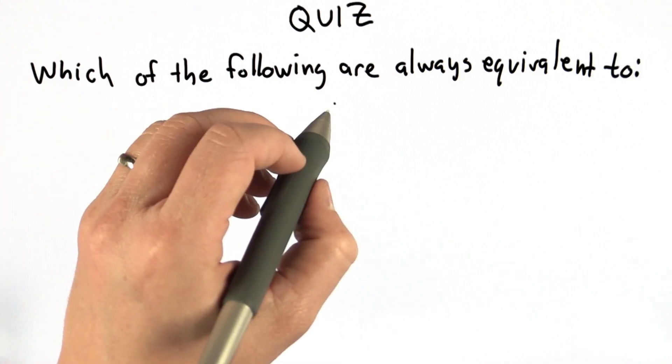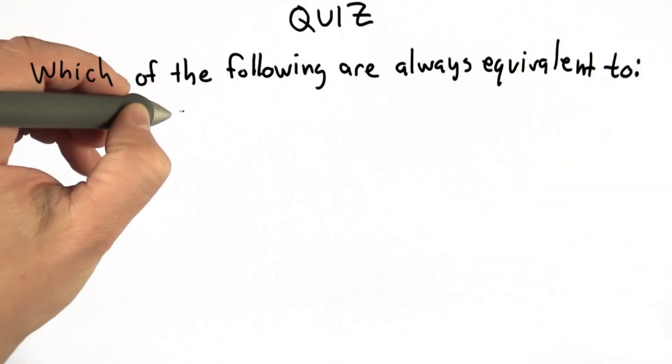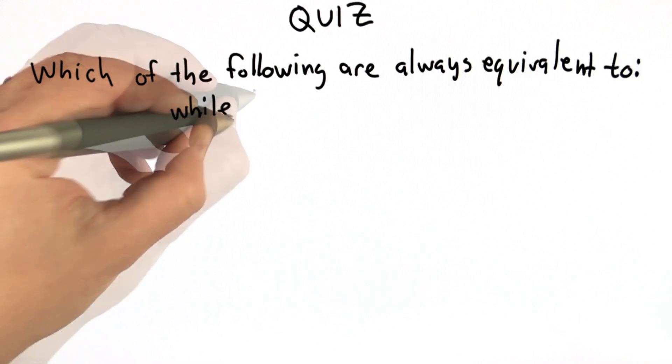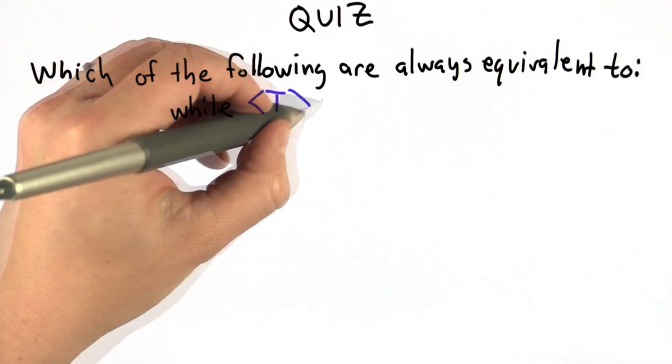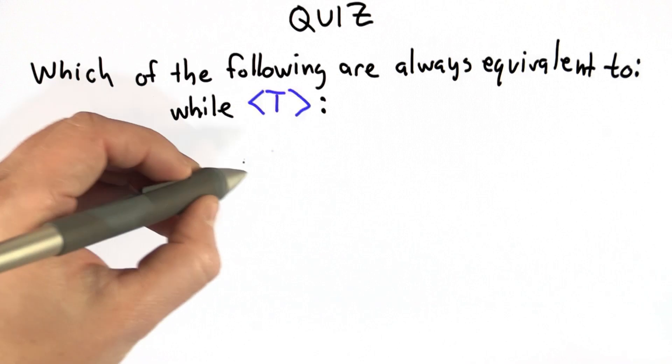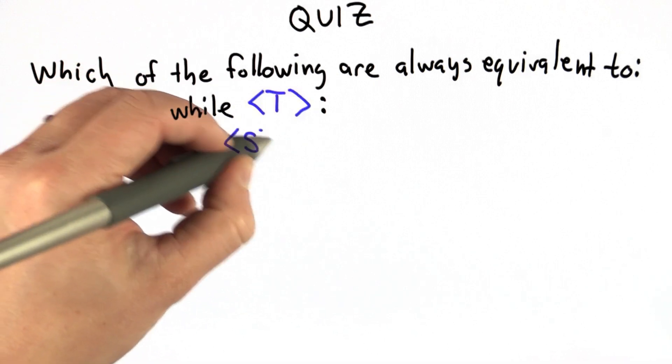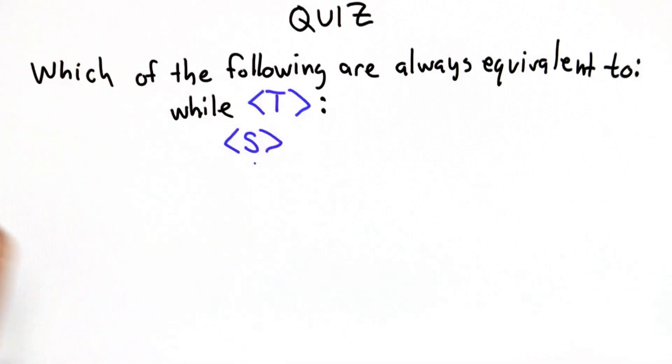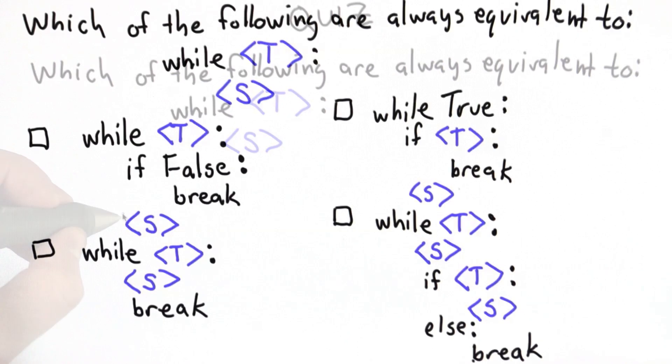The question is which of the following are always equivalent to while any test expression t and a block which is any statement s. So t and s could be anything, and your question is to understand which of these are equivalent to that.